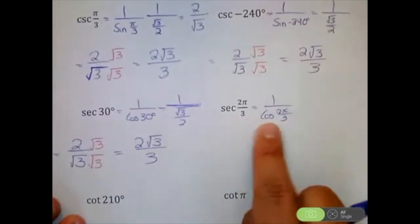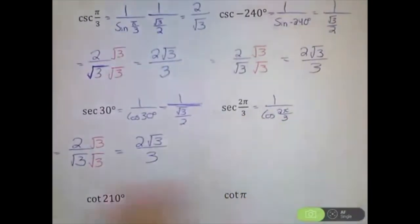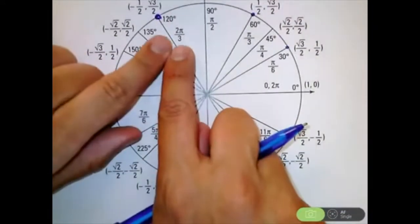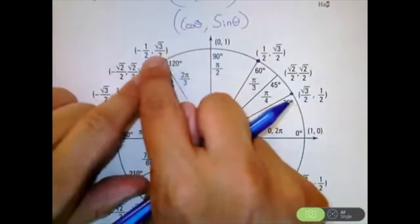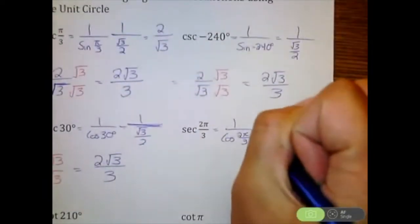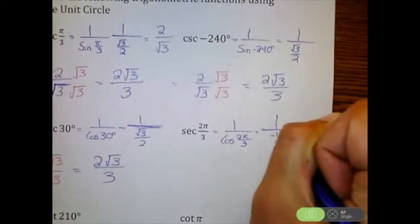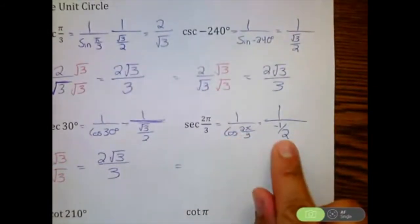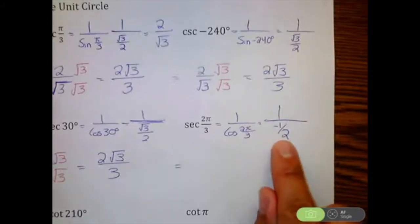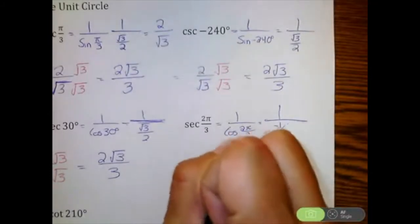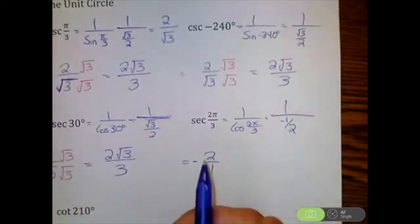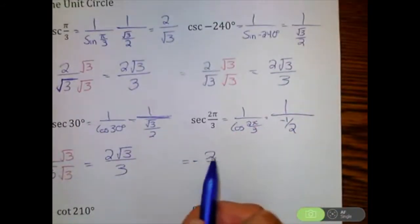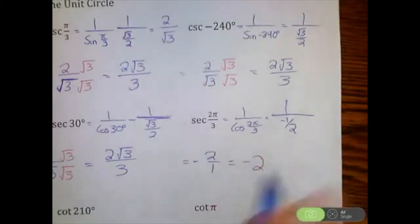For secant of 2π/3, we find one divided by cosine of 2π/3. Looking at 2π/3 on the unit circle, we want the cosine, which is the x-coordinate: negative 1/2. So we have one divided by negative 1/2. Taking the reciprocal — flipping it — gives us negative 2 over 1, which simplifies to negative 2.